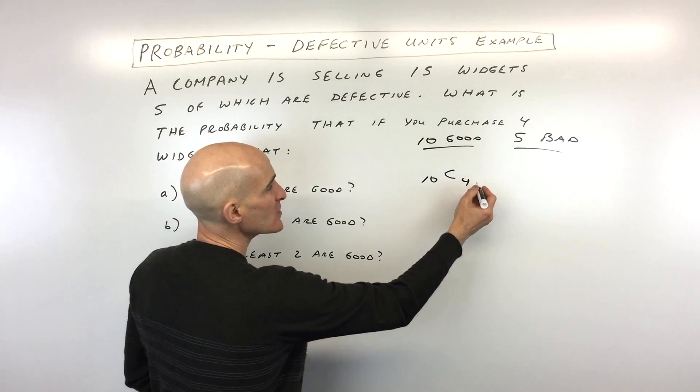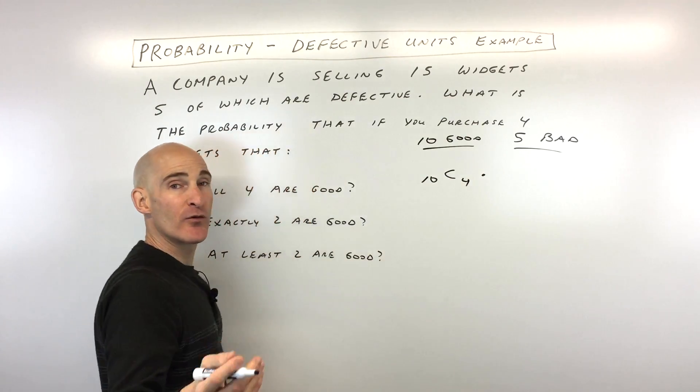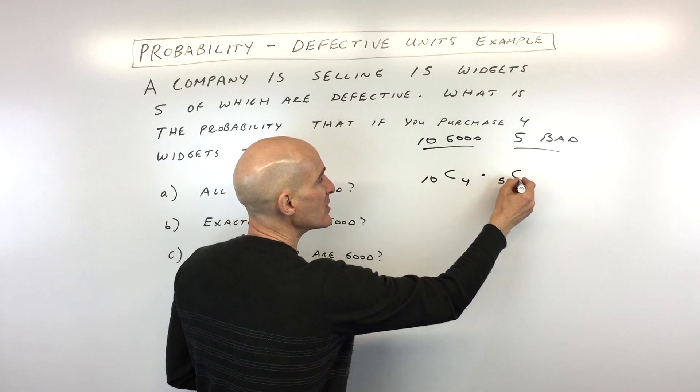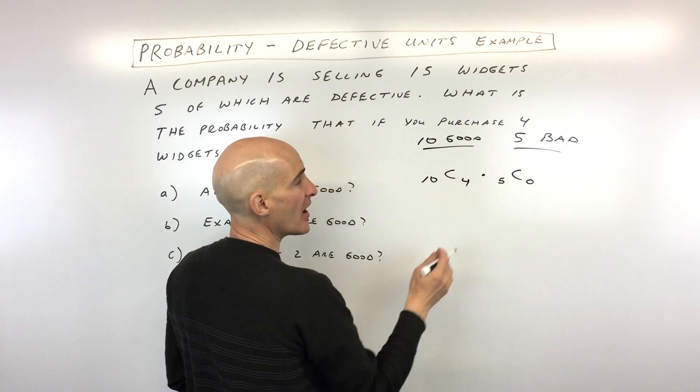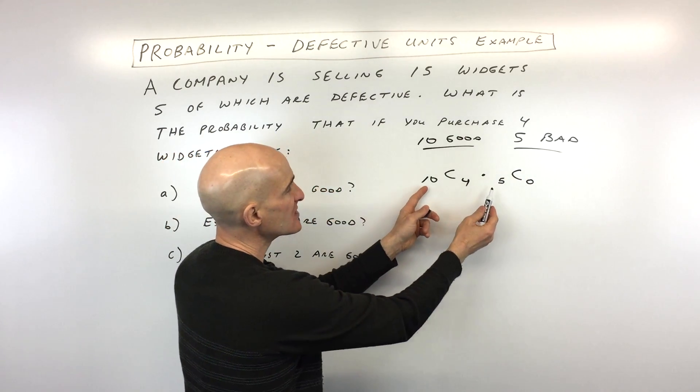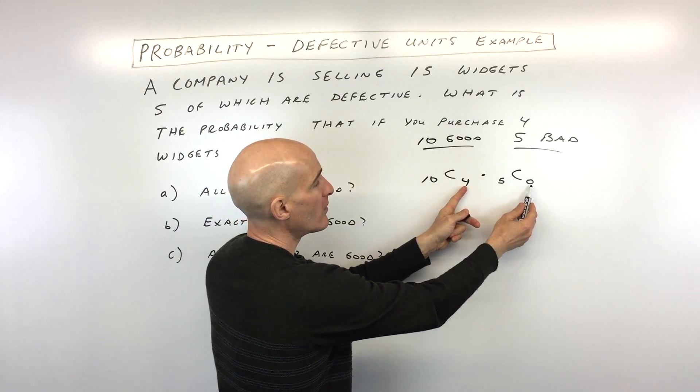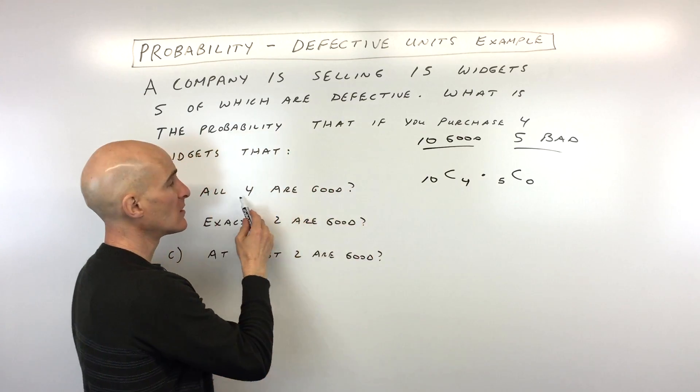But another way to look at this also, and sometimes this is helpful for students, this might be helpful for you too, is to look at, we want out of the five bad ones, we're going to be choosing none. Okay, and what you'll notice here is that the 10 and the five, that's our 15 total widgets. The four plus the zero is the four that we're choosing.